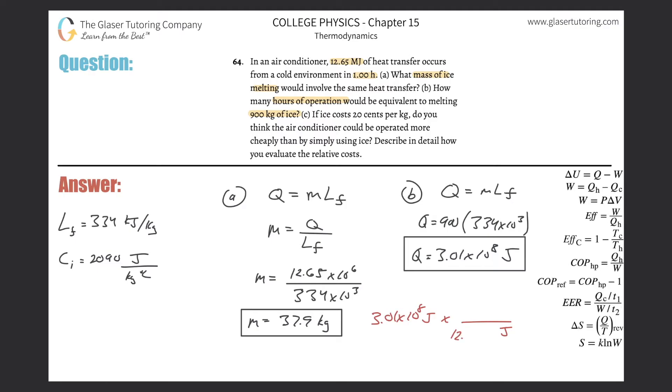And then that was per hour. So notice the joules cancel, leaving us with time. So it's basically just a simple division. So we're going to take that value and divide it now by 12.65 times 10 to the 6th. And it's going to be about 23 hours.